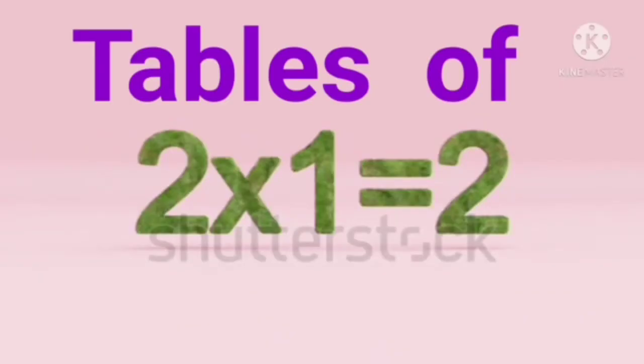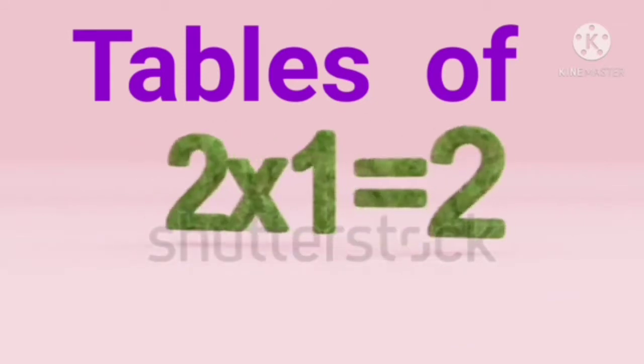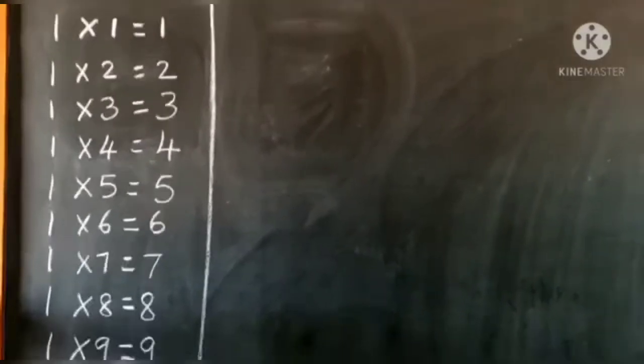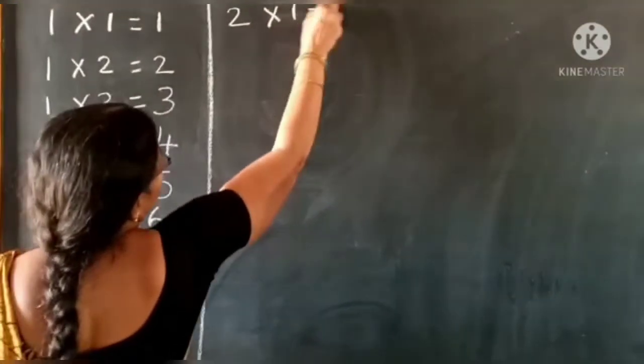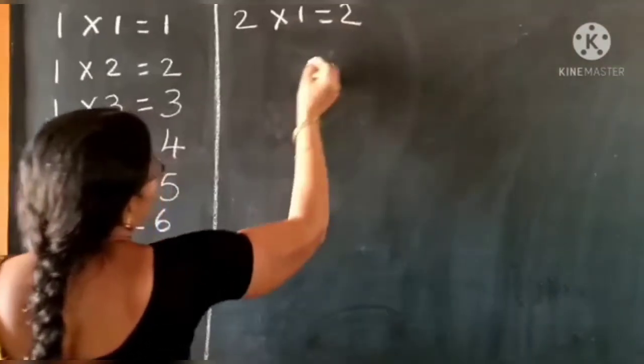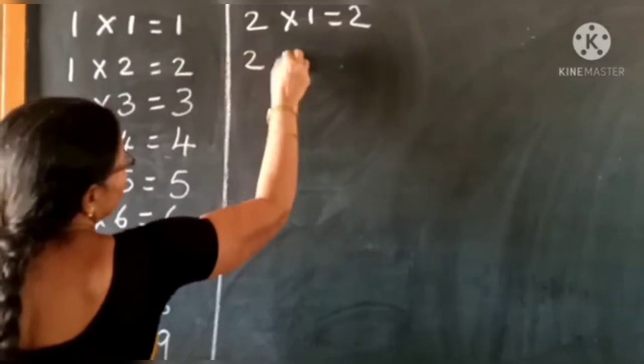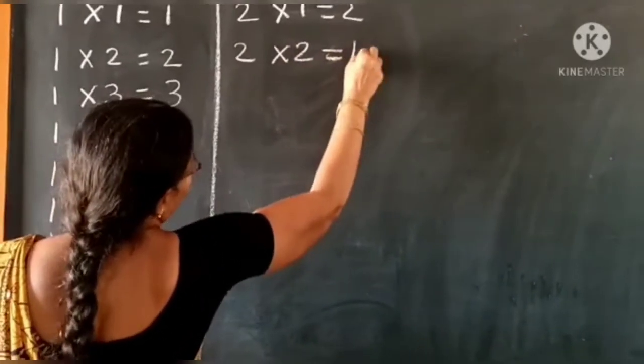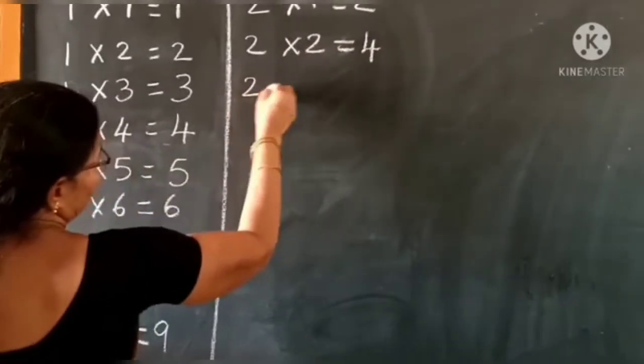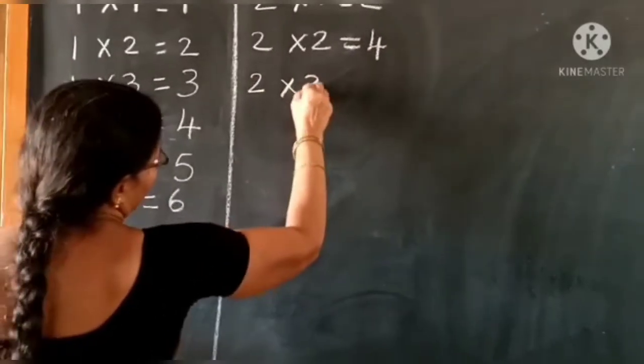Tables of two. Two ones are two, two twos are four, two threes are six.